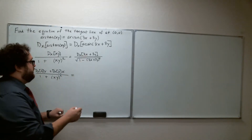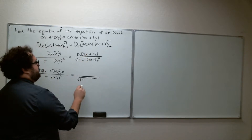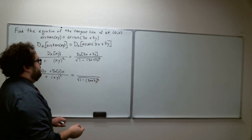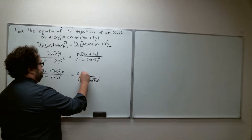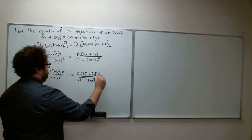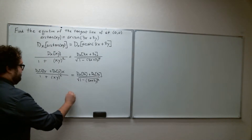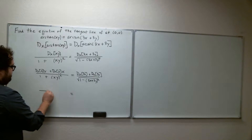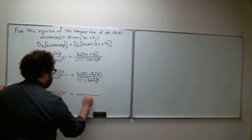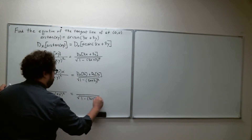Now for the right-hand numerator — that's just the sum of two functions, so we can break that sum apart: the derivative with respect to x of 3x plus the derivative with respect to x of 3y. We still have the same denominators: 1 plus (xy) squared on the left and the square root of 1 minus (3x + 3y) squared on the right.